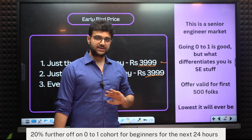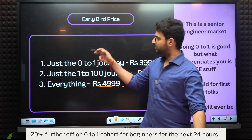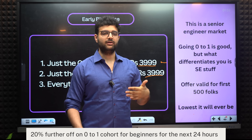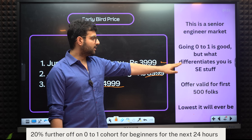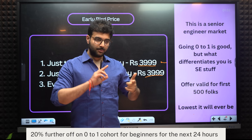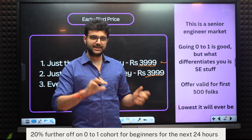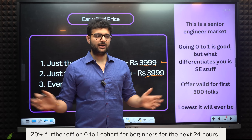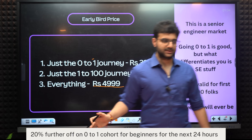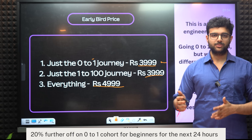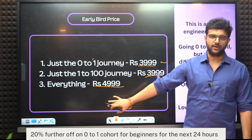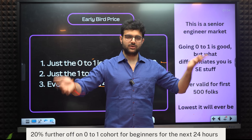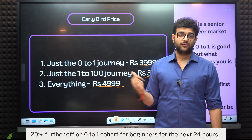A few things to help you decide which part to choose: this is a senior engineer market, which means it's easier to get hired as a senior engineer than a junior engineer today. Going 0 to 1 is good but what really differentiates you is senior engineer skills. Beginner stuff is always on YouTube — you just have to push yourself. If someone guides you through senior stuff it's slightly better, but if you're a complete beginner, do not dive directly into 1 to 100 — you will get overwhelmed. Go from 0 to 100. The early bird pricing is only valid for 500 folks, after which prices will increase to cover TA costs.